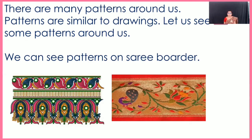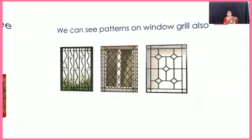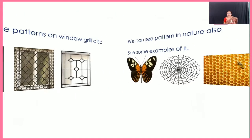Let us see a few examples. These are the patterns on sari borders — this is an example of a man-made pattern. These are the patterns on window grills, which are also patterns made by human beings.